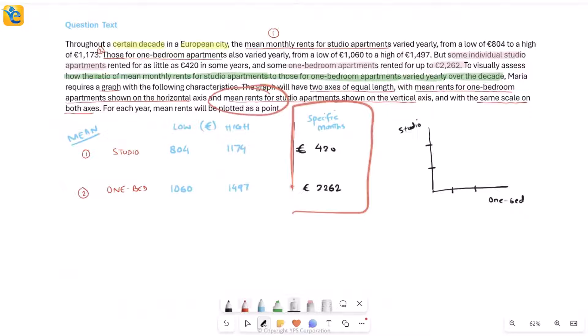Now think about it. Since your goal is to put on this graph only the mean rents, these values, first of all, are unnecessary for you. You don't care about what happens in a specific month. So these should not impact your choice of the range that you need on the x and the y-axis. That's one very important point. Otherwise, you will feel that to include all of these, you might need to go wider than you actually need. Because if you see studio means are only between 804 and 1174, you don't really need to go as low as 420 to cover that entirely on the y-axis.